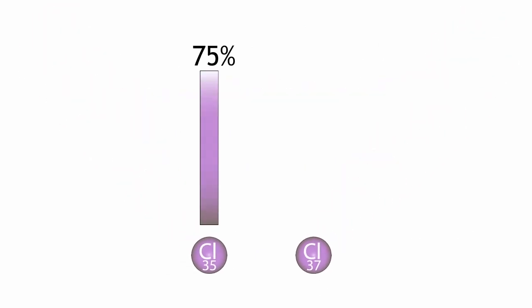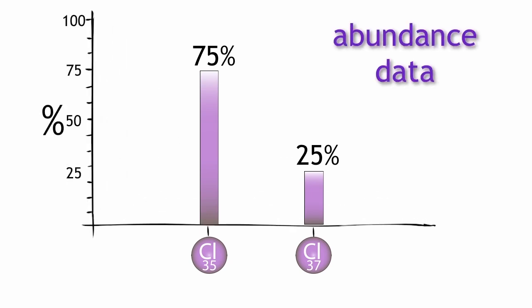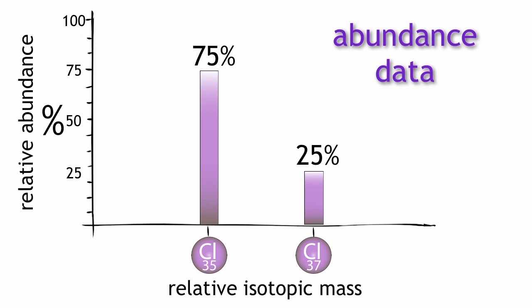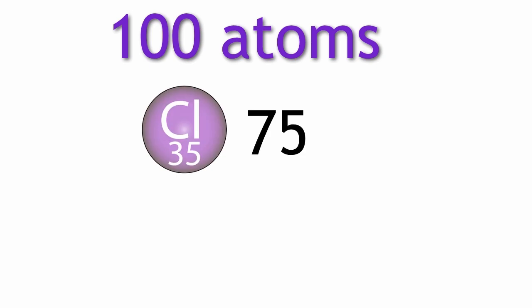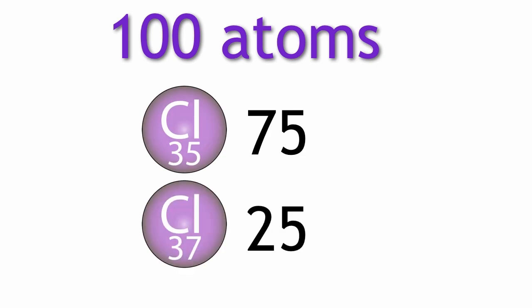Naturally occurring chlorine is made up of 75% chlorine-35 and 25% chlorine-37. This can be shown on a graph of abundance data, where the relative isotopic mass is shown along the x-axis and the relative abundance is shown on the y-axis. So if we had a sample of 100 atoms of chlorine, we would have 75 atoms of chlorine-35 and 25 atoms of chlorine-37.